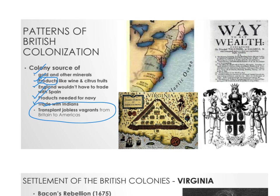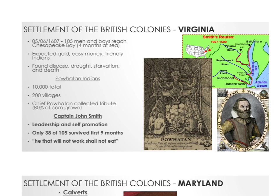One interesting reason for colonization was the transplant of jobless vagrants. In the 1600s, the idea was: if people are poor, ship them to a colony and you don't have to deal with them anymore. It sounds extreme, but that was a real motivation. The first successful British colony we talk about is Jamestown, Virginia — Roanoke had failed miserably — and Jamestown would survive, but barely.